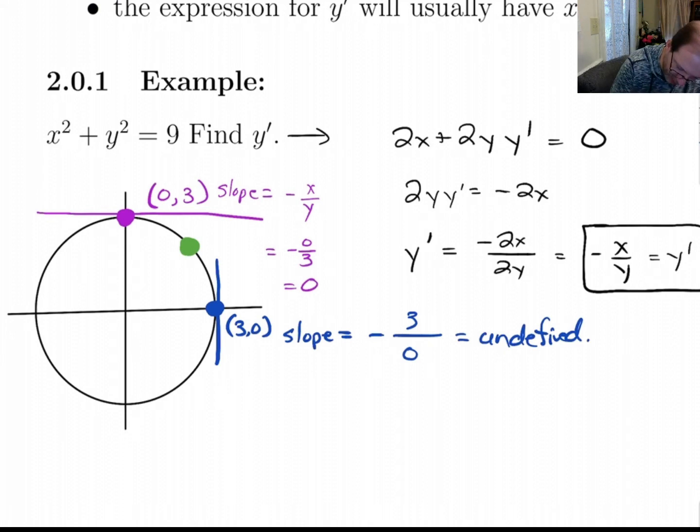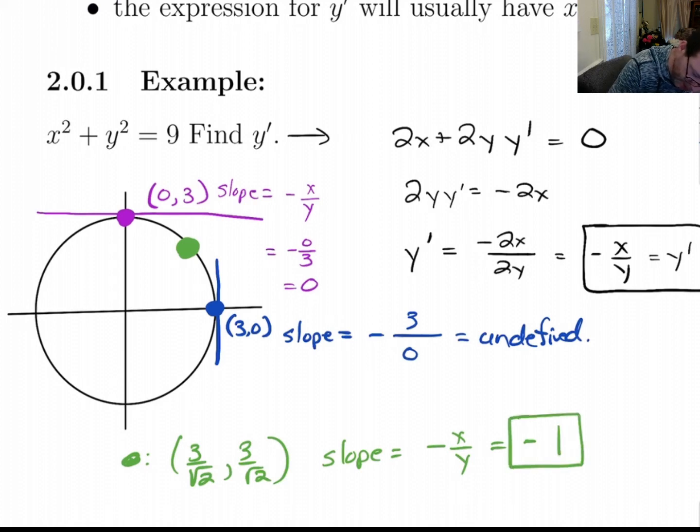Now, if you want to find the slope at some other point, let's go with this point right here. This point is, the green point, assuming it's at a 45 degree angle, the coordinates of that green point are going to be 3 over √2, 3 over √2. And so the slope at that point is minus x over y. And since they have the same coordinates there, the slope is just going to wind up being negative one. That makes good sense. If you draw this line in, it's got a slope of negative one there. So this works.